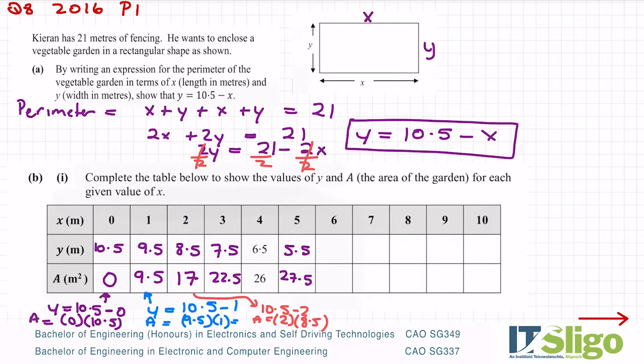Okay, 5 then, anyway, let's proceed: 5.5 by 5 is 27.5 meters squared. Okay, next column: 10.5 minus 6 is 4.5, and the area 6 by 4.5 is 27. Next column: 10.5 minus 7 is 3.5, 7 times 3.5 is 24.5. Next column: 10.5 minus 8 is 2.5, 8 by 2.5 is 20. Next column: 10.5 minus 9 is 1.5, 9 times 1.5 is 13.5. And the last one: 10.5 minus 10 is 0.5, 10 times 0.5 is 5 meters squared. Okay, so that's that table filled in.